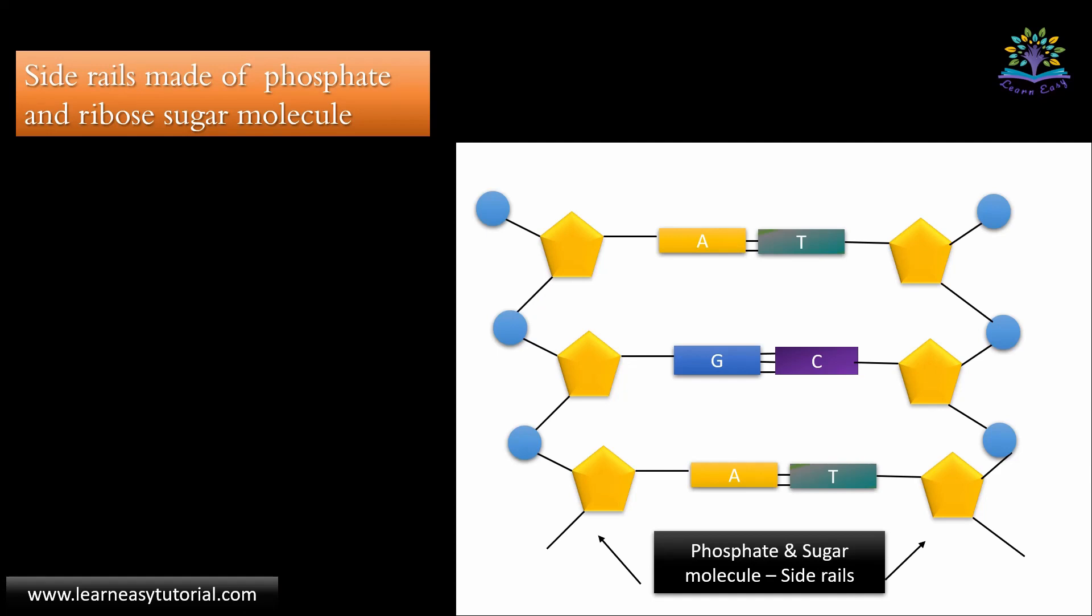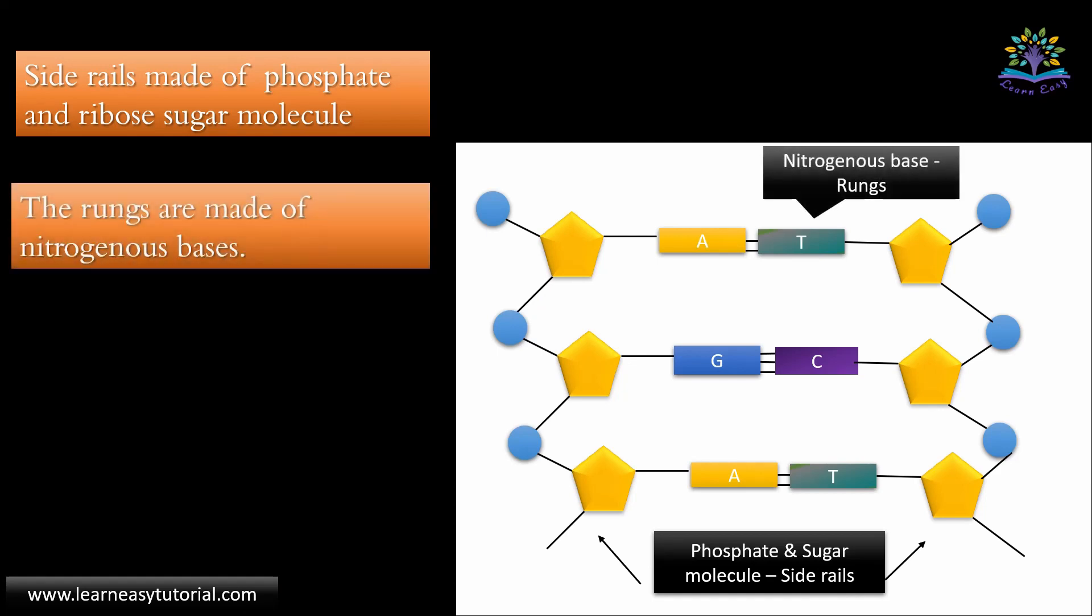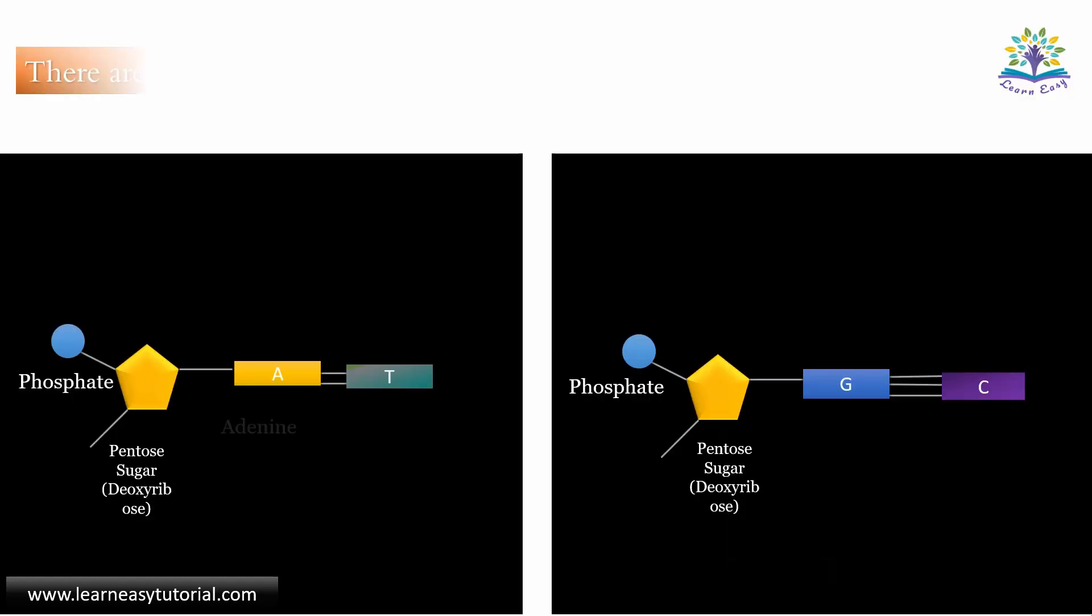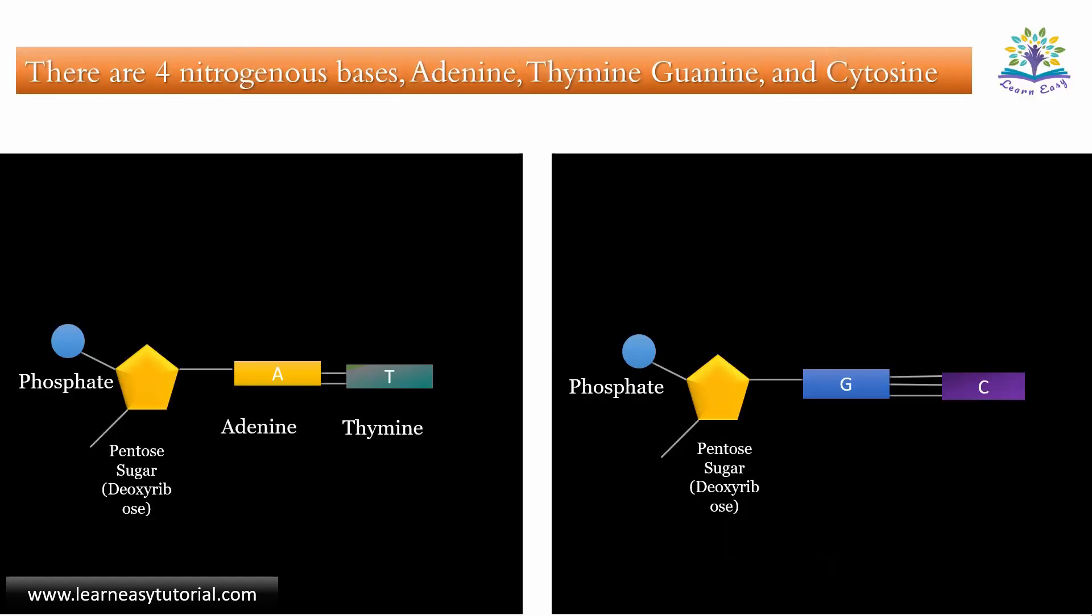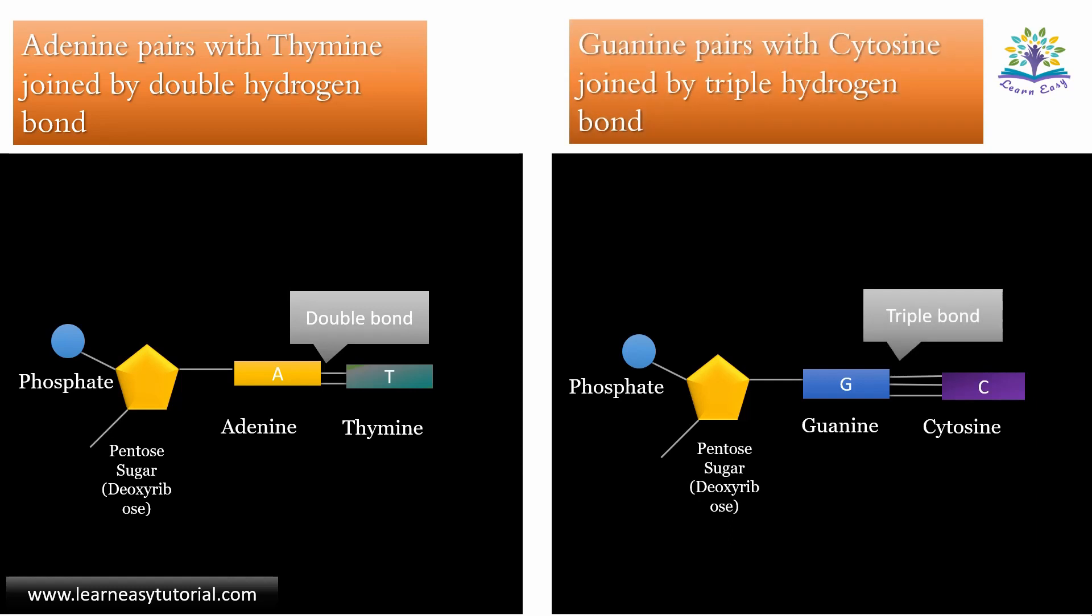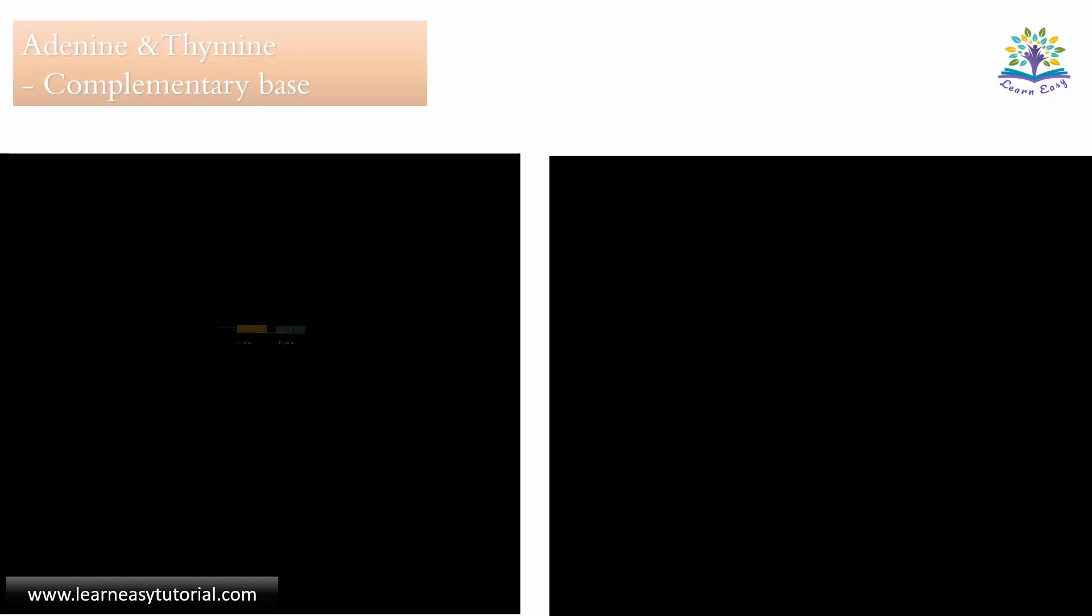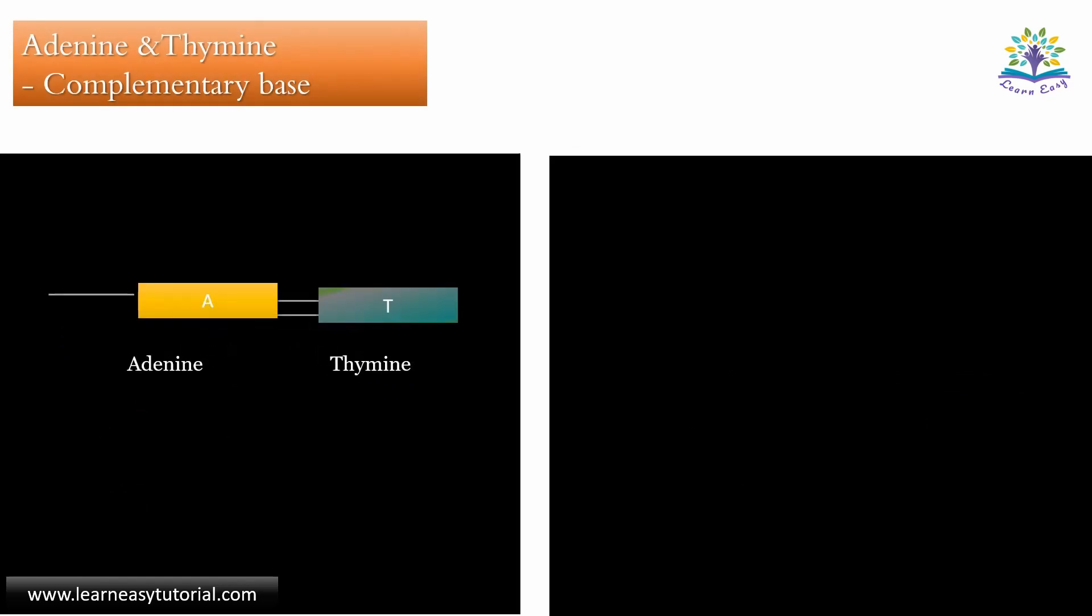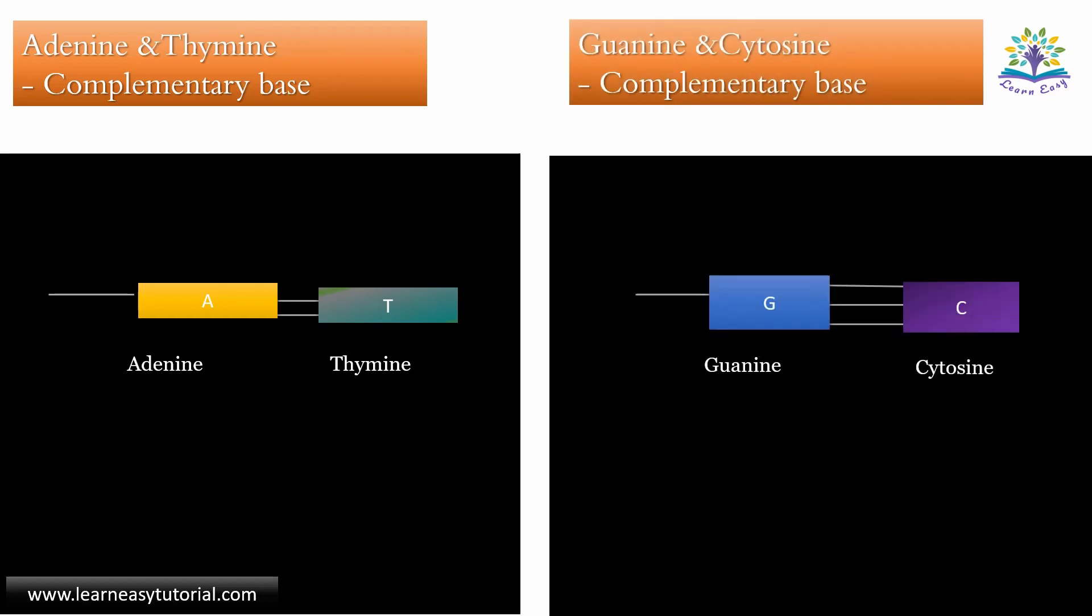The rungs are made up of nitrogenous bases. There are four nitrogenous bases: adenine, thiamine, guanine, and cytosine. Adenine always pairs with thiamine and are joined by hydrogen double bond. Guanine pairs with cytosine and are joined by triple hydrogen bond. So adenine and thiamine form a complementary base, guanine and cytosine form another set of complementary base.